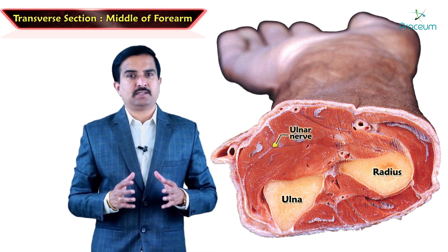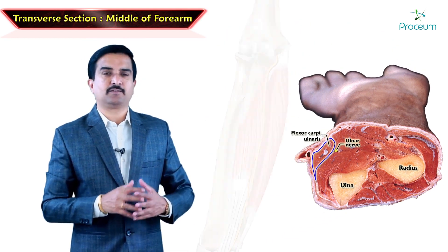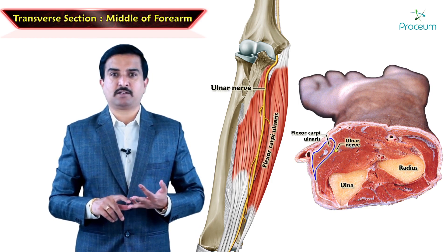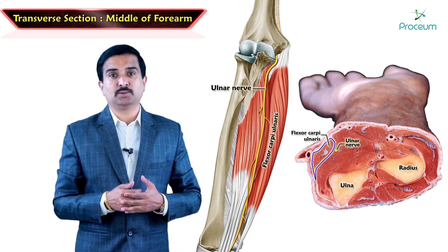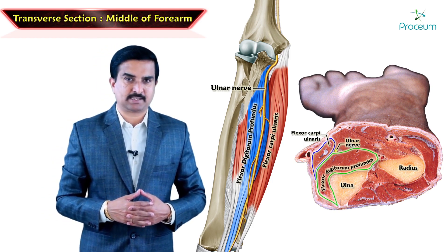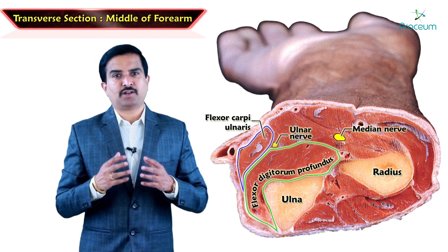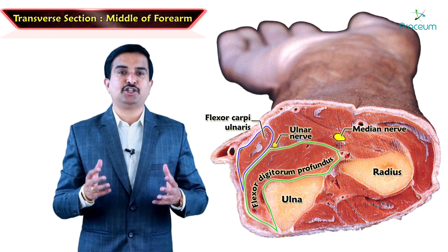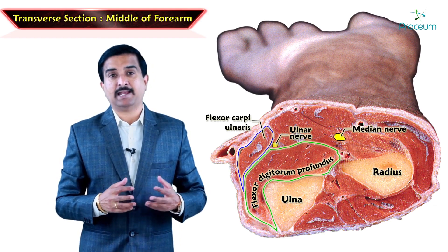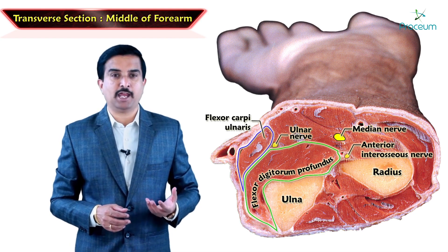The nerve present deeper to the flexor carpi ulnaris is the ulnar nerve. The ulnar nerve supplies the flexor carpi ulnaris and also the medial half of the flexor digitorum profundus, because the lateral half is supplied by the median nerve. The rest of all the muscles of the anterior compartment are innervated by the median nerve and its deeper branch known as the anterior interosseous nerve.